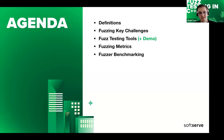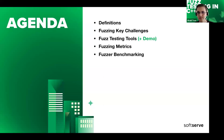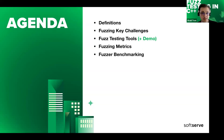Firstly we'll start with definitions, where we'll clarify key terms and concepts foundational to fast testing. Next, under Fast Testing Key Challenges, we'll discuss complexities when implementing fast testing. Moving forward we'll delve into fast testing tools, then cover fuzzing metrics to measure effectiveness. Finally, we'll conclude with fuzzer benchmarking to compare different fuzzers.